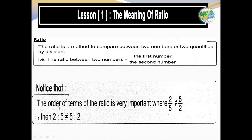Note: the order of terms of the ratio is very important. For example, 2 over 5 does not equal 5 over 2. We denote the ratios using two dots — 2:5 — which is not equal to 5:2.